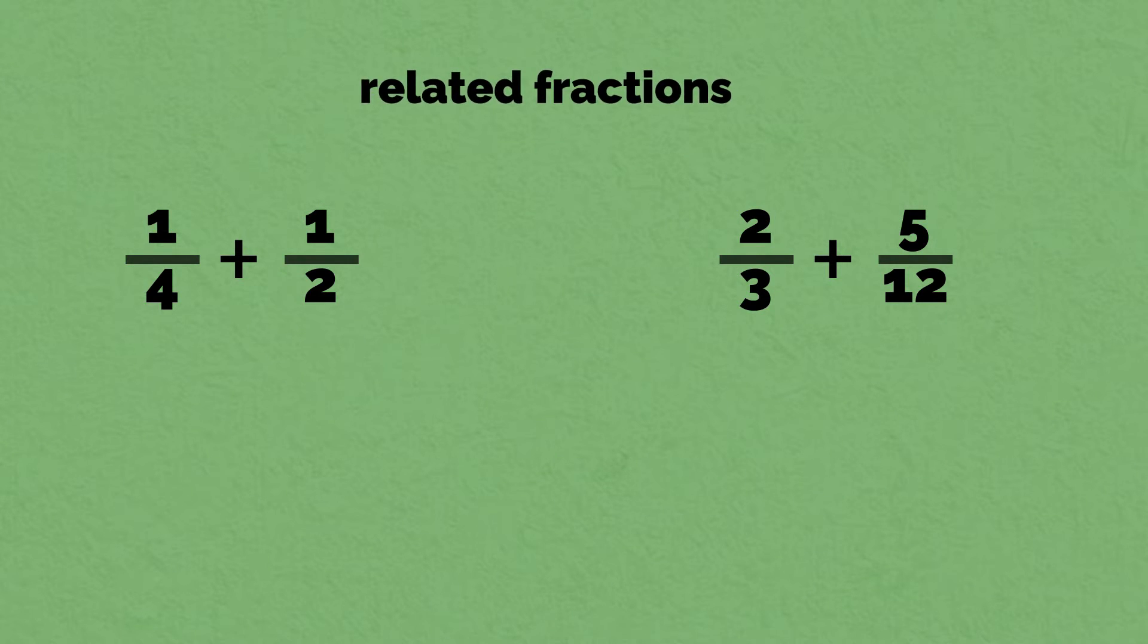So far we've gone through two examples: 1 quarter plus 1 half and 2 thirds plus 5 twelfths. These were both examples of adding related fractions. Related fractions have different denominators that are multiples of each other. 1 quarter and 1 half are related because 2 goes evenly into 4. 2 thirds and 5 twelfths are related fractions because 3 goes evenly into 12.